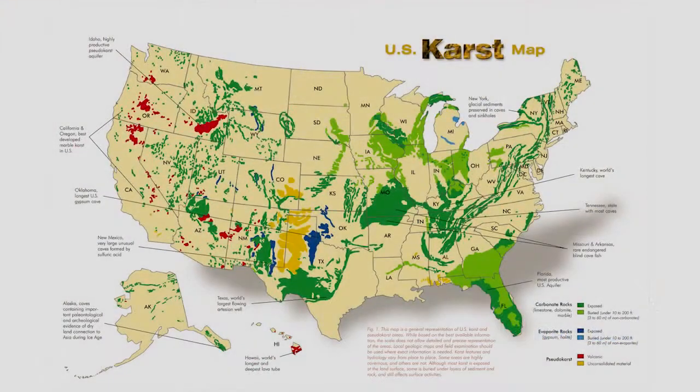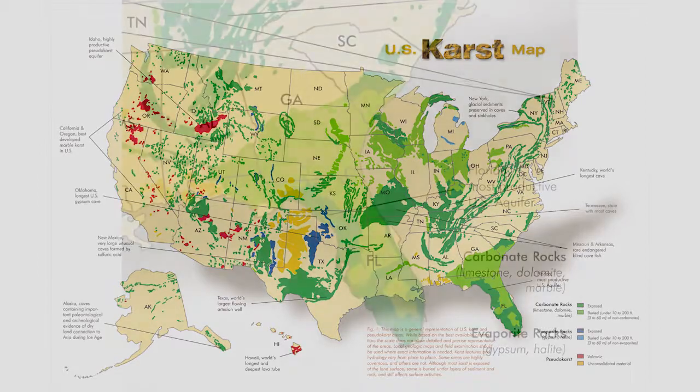As you can see from this geologic map, karst affects approximately 25% of the United States. The type of karst differs slightly from the south to the north.